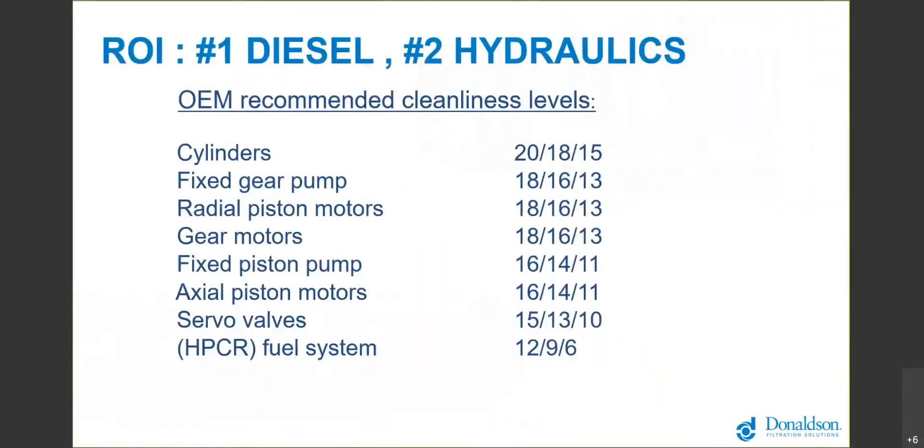We don't have time to get into ISO cleanliness codes specifically, but we have other videos that do that on our website. It's a three digit number that tells you how clean or how dirty it is. The lower the number, the cleaner the fluid. Really what it comes down to is the higher the pressure in the circuit, so high pressure common rail injectors injecting fuel at 30,000 psi plus, that circuit needs to be cleaner than your engine oil circuit. We basically say that the most important circuits, or the circuits that provide the fastest return on investment, are your fuel and your hydraulics.